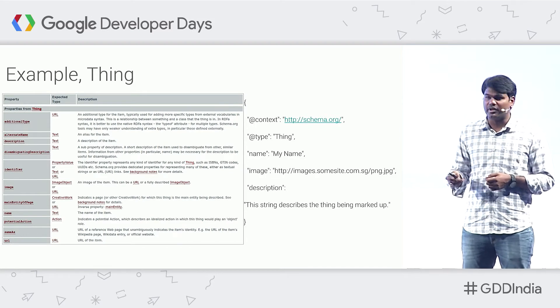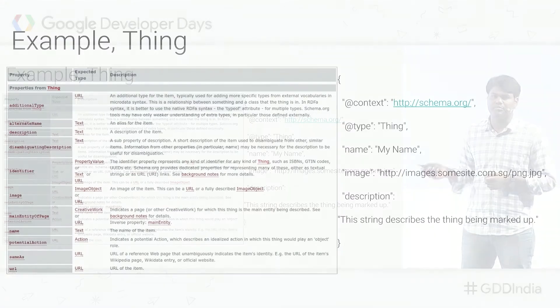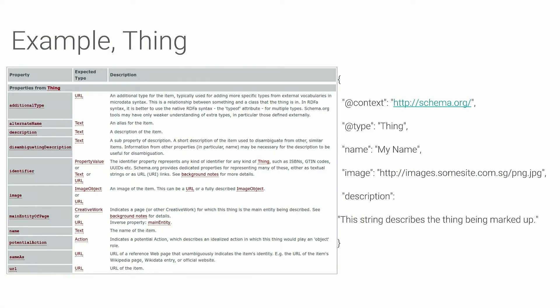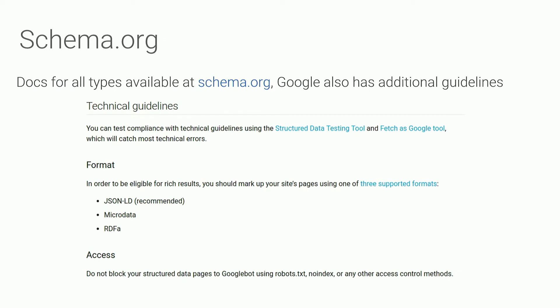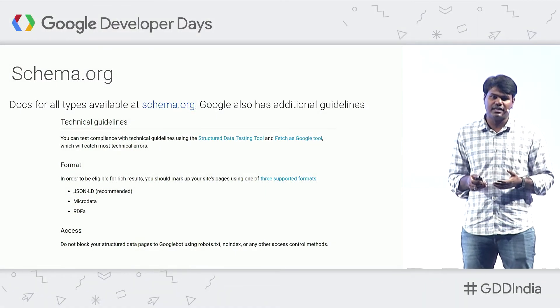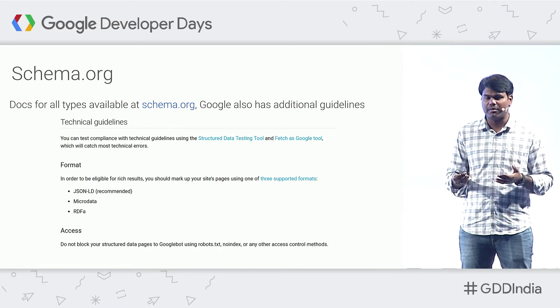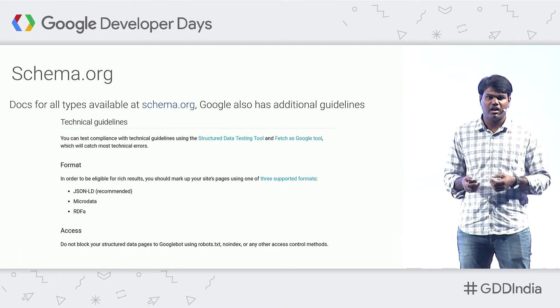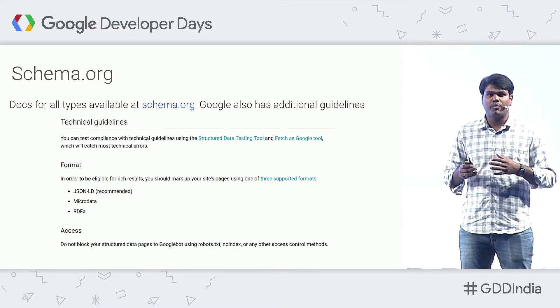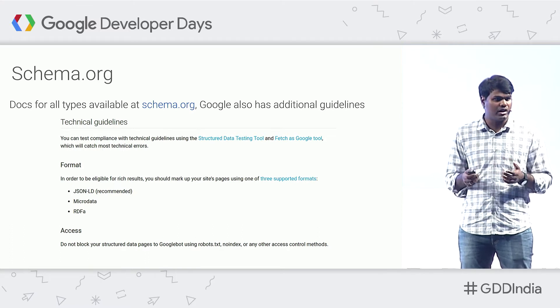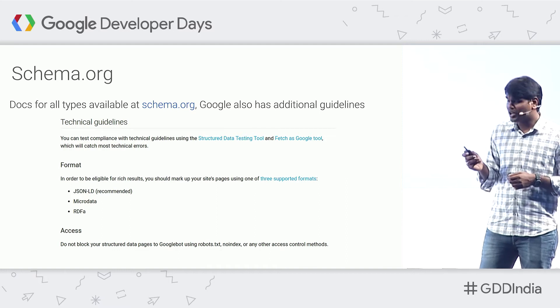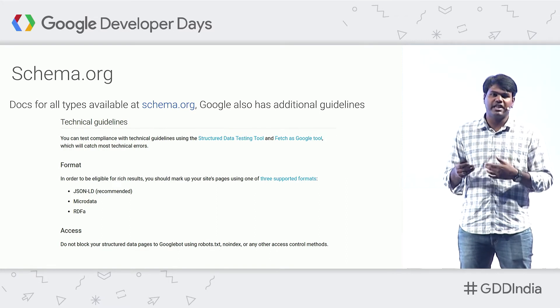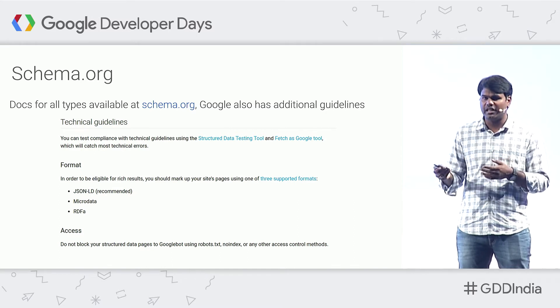You can visit the schema.org website to look at all the different data types and relationships between data items. Apart from schema, Google also has its own guidelines available at developers.google.com. We have two types: technical guidelines and quality guidelines. We have these because even though you've marked up your content using schema, sometimes Google still faces trouble accessing your content — for example, making sure all your marked-up content is accessible by Google.